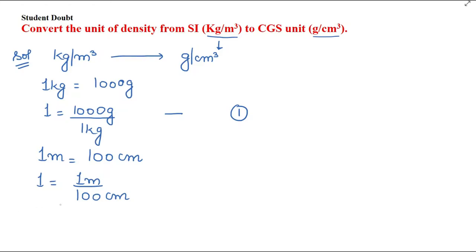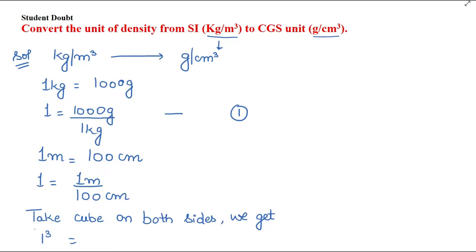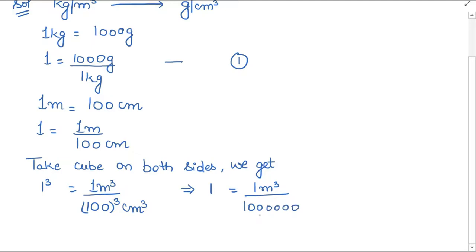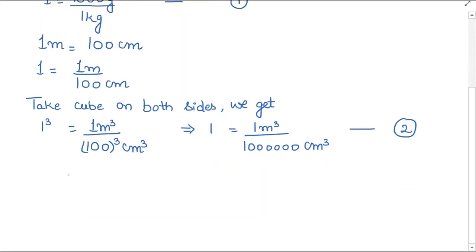Now take cube on both sides. We get 1 meter cube equals 100 cubed centimeter cube. Since 100 cubed means six zeros (10⁶), we get 1 meter cube equals 10⁶ centimeter cube. This is our second value.